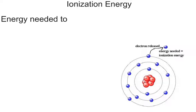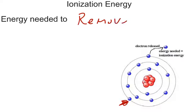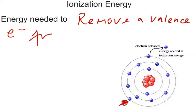Ionization energy, by definition, is the energy needed to simply remove an electron of the valence shell of an atom. For example, we have a valence electron right here. If you wanted to remove it, depending on the attraction and other factors in the atom, it probably will come off very easily, or it will take a lot of energy to remove it. So ionization energy is the energy needed to remove a valence electron from an atom — a nice, simple, but important definition.